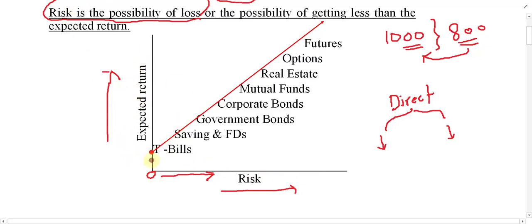In the case of treasury bills, risk is equal to zero because they are issued by the central bank on behalf of the government, so the chance of default is very low — there is virtually no chance of default, and since it is for less than one year, the government may not go into default. So it is a risk-free security. As risk is zero, return is also less — for example, just five percent.